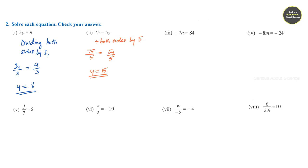Third question: minus 7a is equal to 84. Dividing both sides by minus 7: minus 7a divided by minus 7 is equal to 84 divided by minus 7, that is, a is equal to minus 12.